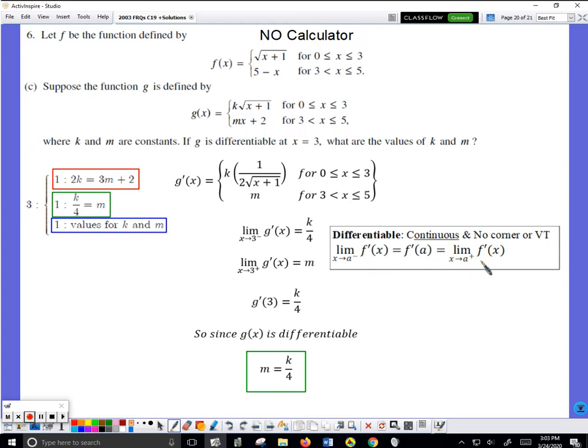So I need to take this formula for g and find the derivative. Well k is a constant so it doesn't do anything. This is the square root. The derivative of the square root of something is one over two times the square root of the something, multiplied by the derivative of the something. But the derivative of x plus 1 would simply be 1. So the derivative of this is this.